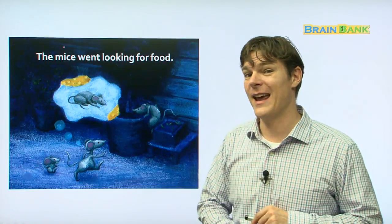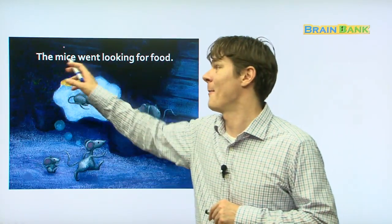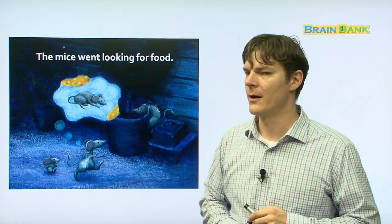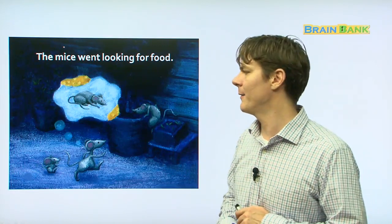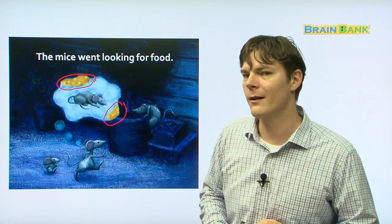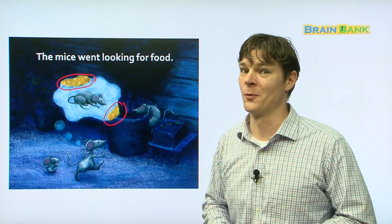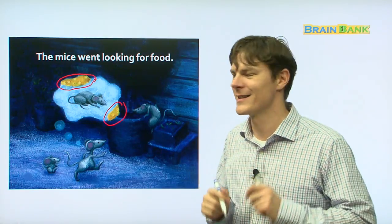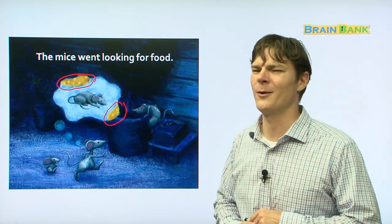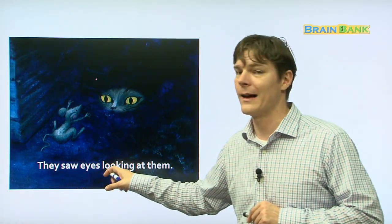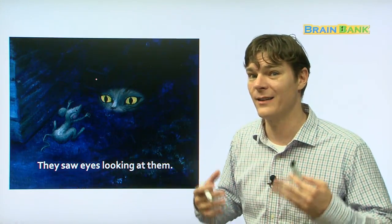They went looking for food. Everybody repeat. The mice went looking for food. Now, this is kind of easy, probably. What kind of food are they looking for? Right here. Do you see what color it is? Two pieces. They're what color? Yellow. That's right. What do mice really, really, really, really like? Cheese. This is cheese. The mice are so hungry and they can't wait to get this cheese. But they saw eyes looking at them. Everyone read with me. They saw eyes looking at them.